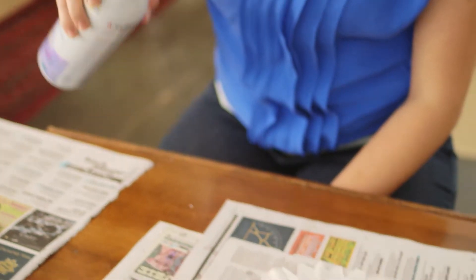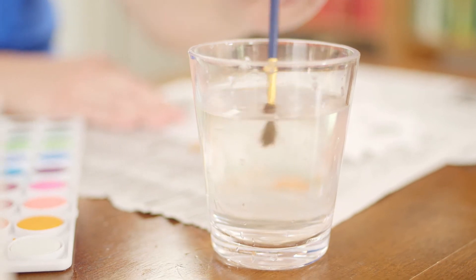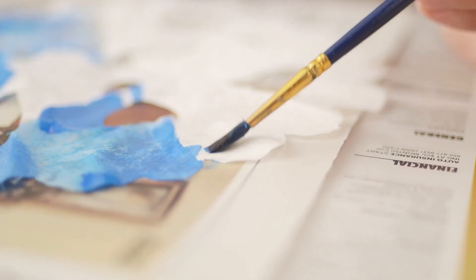Start by spritzing a snowflake with liquid starch and let it dry. Paint the snowflake with watercolor, which spreads the best on unfolded paper.